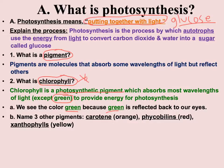Three other pigments: carotene — that's where carrots get their name — makes some plants look orange. Phycobillins makes leaves like maple leaves look red. Xanthophils makes leaves look yellow. All are involved in photosynthesis, but if you're going to remember any of them, remember chlorophyll — it's the main pigment that allows plants to make glucose.